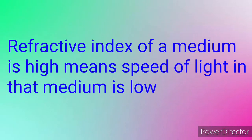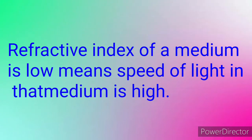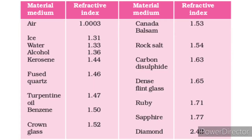If the refractive index of a medium is high, the speed of light in that medium is low. Similarly, if the refractive index of a medium is low, the speed of light in that medium is high.